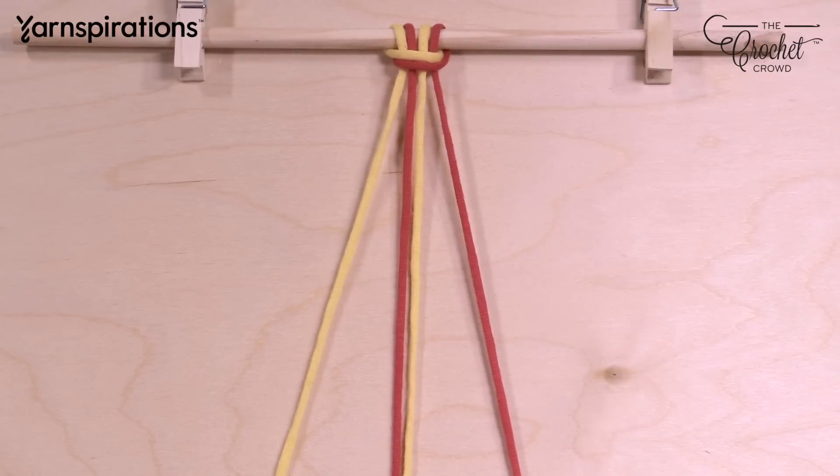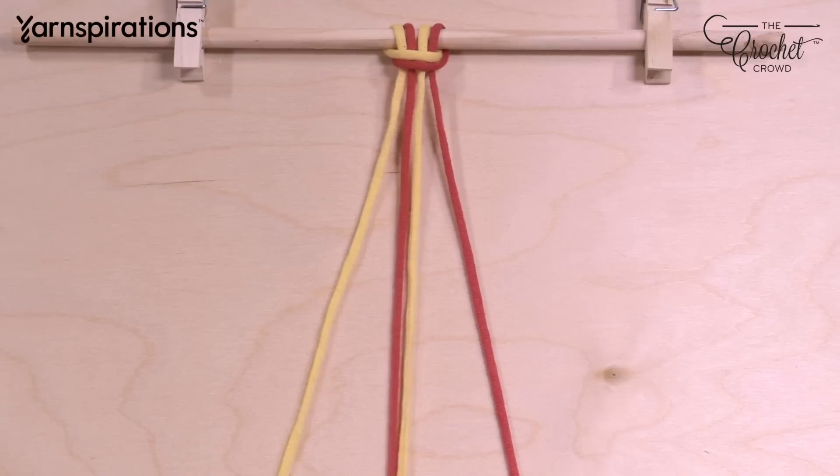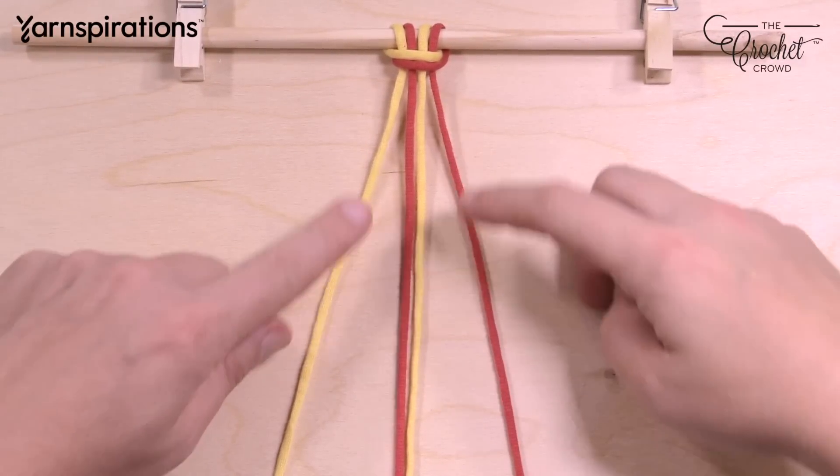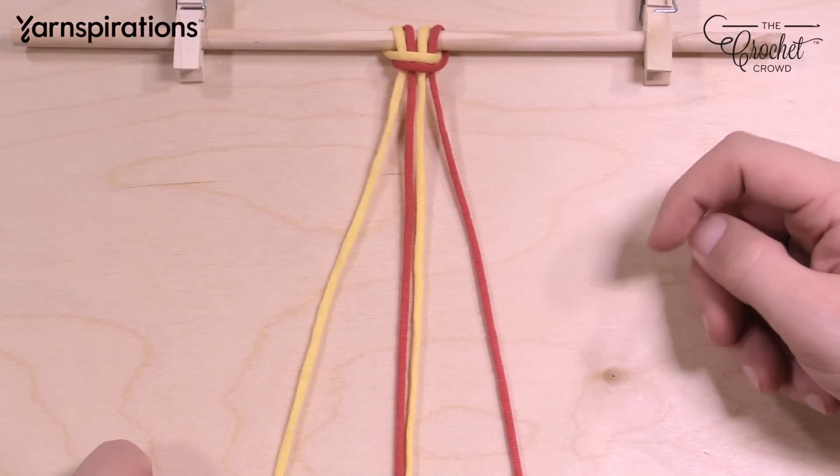Let's show you how to do this particular knot. I want you to split your yarns up so that you have the ones coming down the center and the ones you want to work with on the side. I split up the color for your convenience.